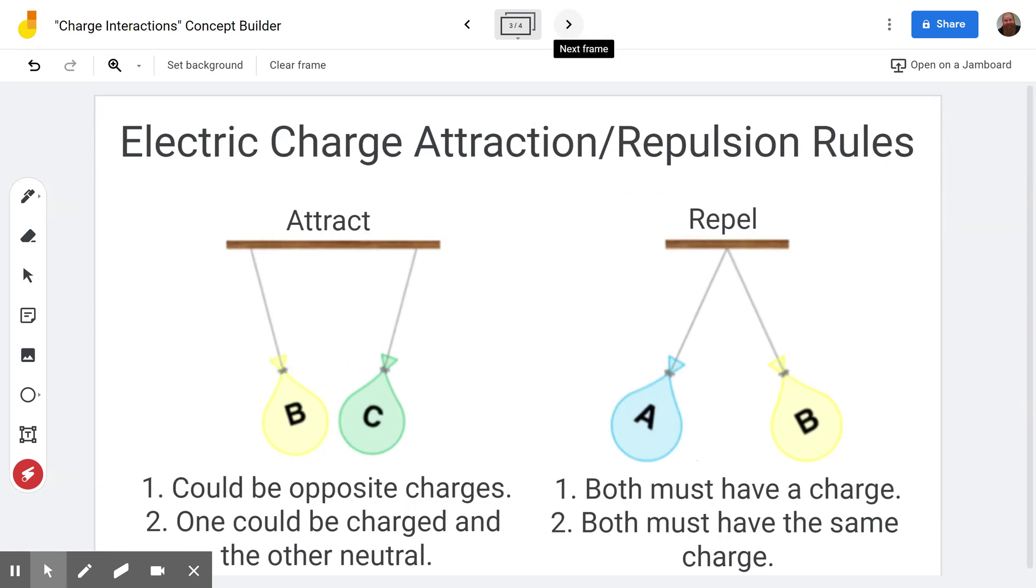You're going to have a whole bunch of little pieces of information you have to piece together. Here's the key things to remember: when you see that two things attract, there are two options. One is they could be opposite charges. So if B is positive, C could be negative. If B is negative, C could be positive. The other option is that one could be charged and the other neutral, because remember a neutral thing attracts to a charged item. So if B is negative, C could be positive or neutral. If B is positive, C could be negative or neutral. Now there may be another piece of information that contradicts that and makes it so you know C can't be neutral.